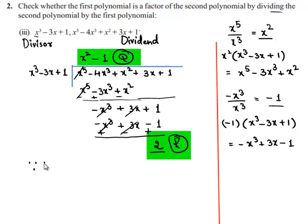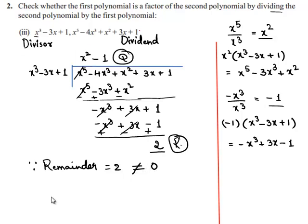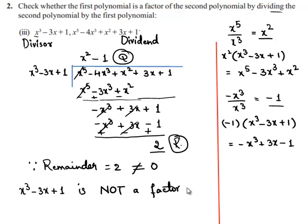Since the remainder is equal to 2, which is not equal to 0, we can say that the second polynomial is not a factor of the first polynomial. That means x³ - 3x + 1 is not a factor of x⁵ - 4x³ + x² + 3x + 1.